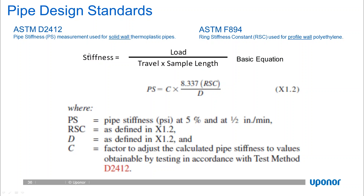Both pipe stiffness and ring stiffness constant are interrelated, sharing the same fundamental basic equation—load over a travel distance and sample length. In accordance with PPI Chapter 6, the Plastic Pipe Institute Chapter 6 for Design of Thermoplastic Materials and Polyethylene Pipe, the two can be related by equation X1.2. For deflection calculations in accordance with the Plastic Pipe Institute, we utilize Spangler's modified Iowa formula—equation 3-10 for solid wall polyethylene pipe and equation 3-11 for structural profile wall pipe.